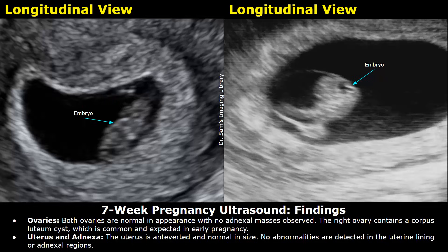Uterus and adnexa: the uterus is anteverted and normal in size. No abnormalities are detected in the uterine lining or adnexal regions.